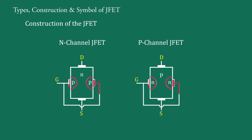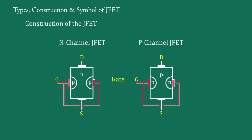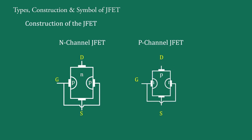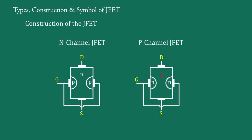These two regions are connected by a lead called the gate. It is clear that in an N type bar, the gate regions are produced by diffusing P type material, and in a P type bar, the gate regions are produced by diffusing N type material. The region between the gates is called the channel. Thus, a JFET has essentially three terminals: Gate G, Source S, and Drain D.